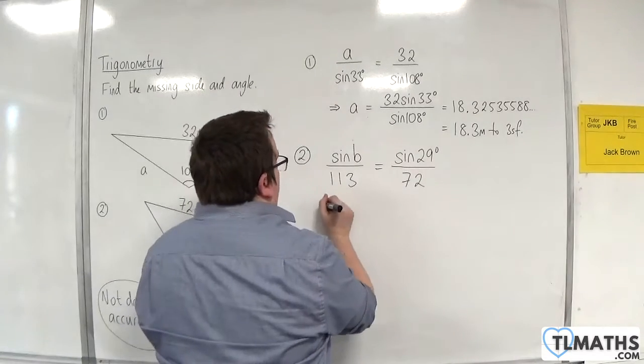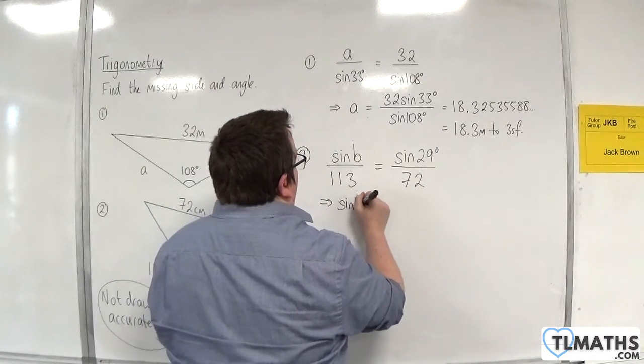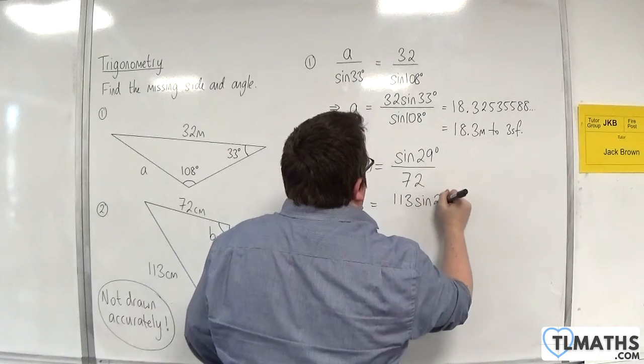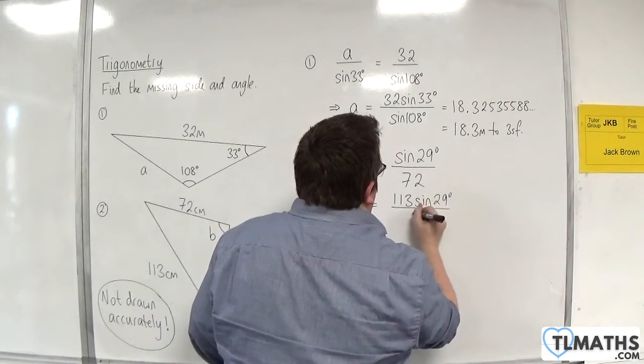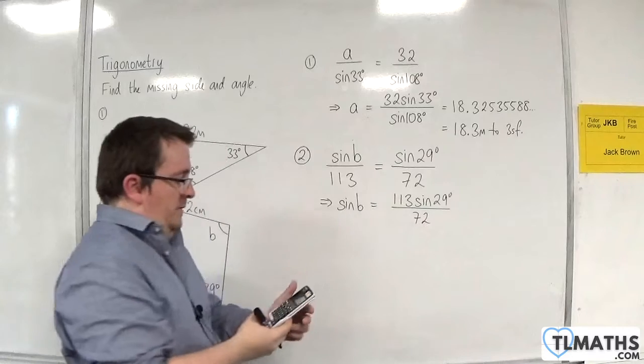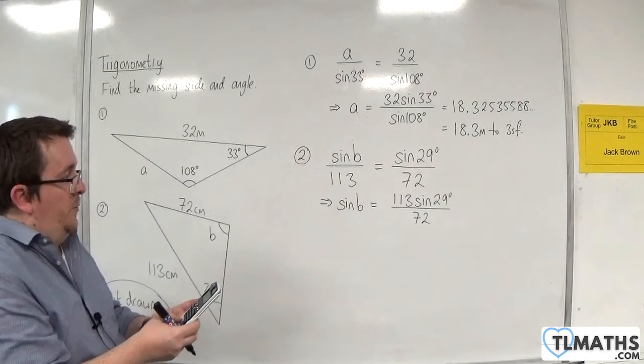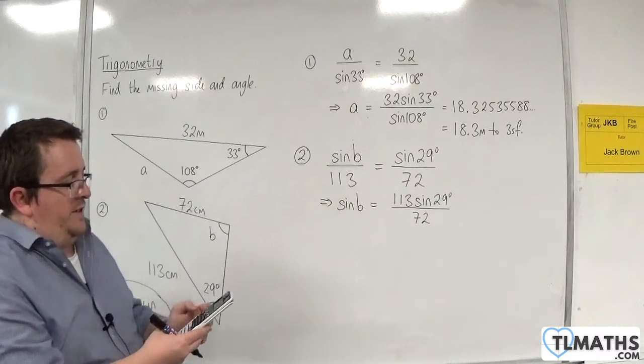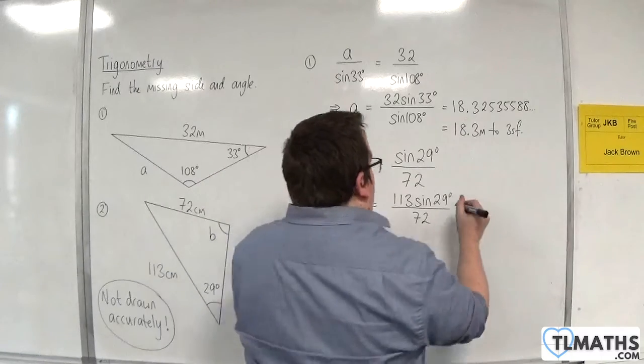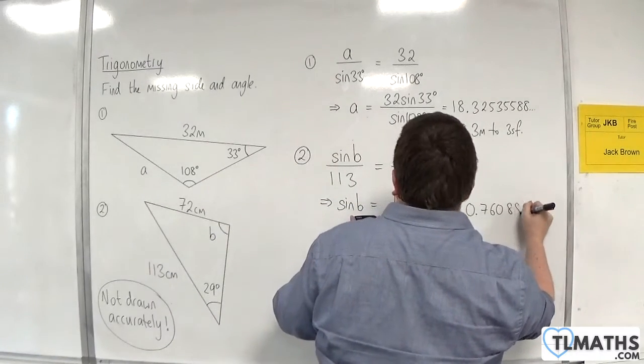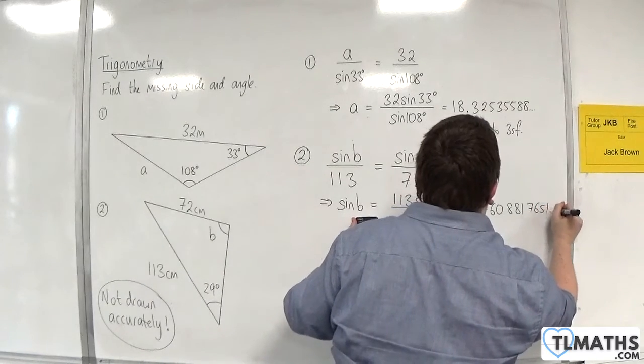Sine of the angle b must be equal to 113 sine of 29 degrees over 72. Let's put that into our calculator: 113 times sine of 29 divided by 72. We get 0.7608817651.